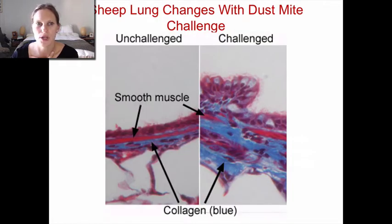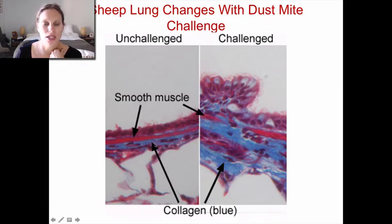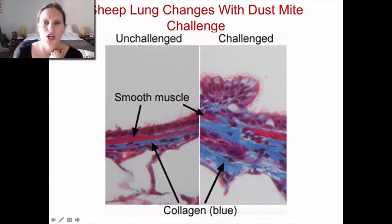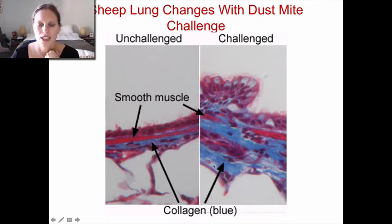On this picture of a sheep airway, smooth muscle stains red and collagen — the scar tissue — stains blue. The unchallenged airway on one side isn't hypersensitive or reactive, while the challenged airway on the other side looks dramatically different: you can almost see all the mucus, the cells are hypertrophied, and there's a lot of collagen — meaning it will be very stiff over time.